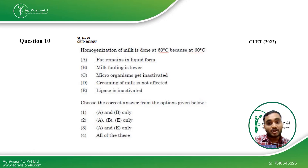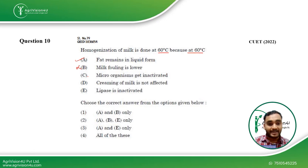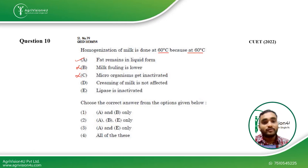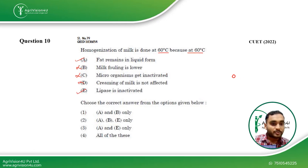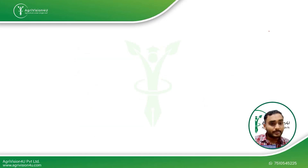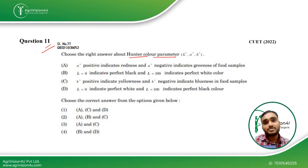Coming to Question 10: homogenization of milk is done at 60°C because at 60°C fat remains in liquid form — yes, this is correct. Fouling of milk is lower — no, this is not correct. Microorganisms get inactivated — we know at 60°C they will not get inactivated. Creaming of milk is not affected — homogenization is done specifically to affect creaming; without it, cream separates on storage. We homogenize to decrease fat globule particle size, making them more digestible. Lipase is inactivated — this is true. So options A and E are correct, making the third option the right answer. This was asked in CUET 2022.